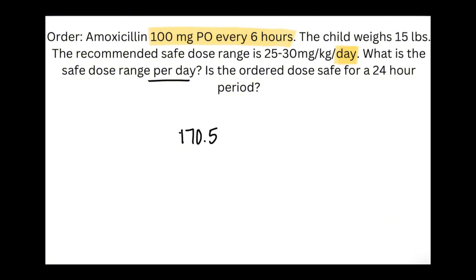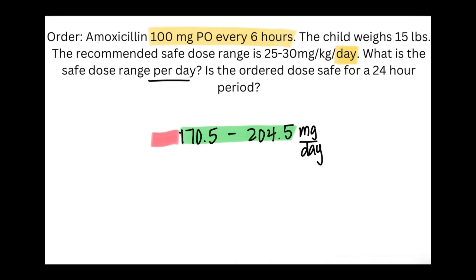Our safe dose range is 170.5 to 204.5 milligrams per day. The least the patient can receive is 170.5 and the most is 204.5 milligrams per day. This is the green zone — anything that falls inside is safe. Anything less than 170.5 or more than 204.5 is in the red zone.